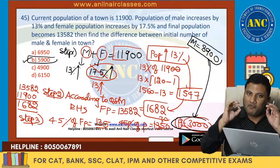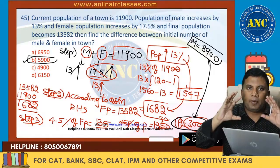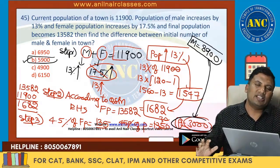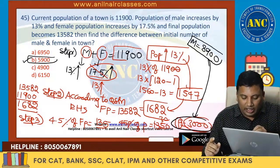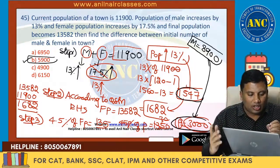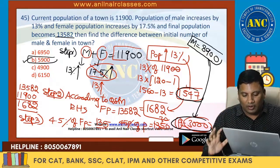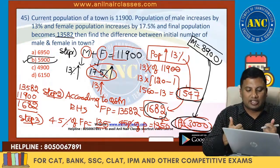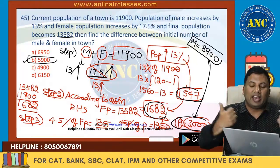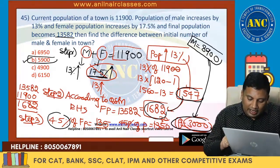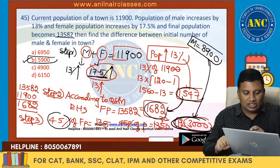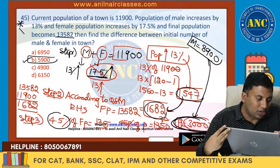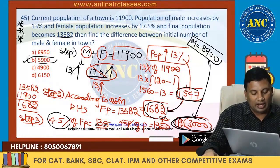Male is 8,900, female is 3,000, and the difference is 5,900. Very beautiful question — easy if you understand the concept. Male increases by 13%; if female also increases by 13%, population increases by 13%, giving 1,547. But actually the population became 13,582, so the increase is 1,682. The difference is 135, which comes from the extra 4.5% on female population, giving female = 3,000 and male = 8,900. Extremely important question from the exam point of view.